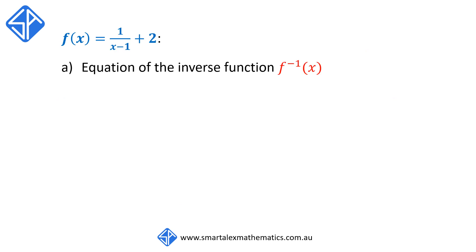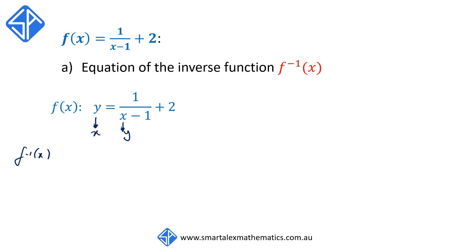Our second example is f of x is equal to 1 over x minus 1 plus 2. To find the equation of the inverse function, we write f of x as y is equal to 1 over x minus 1 plus 2. We then interchange the variables x and y, so our inverse function becomes x is equal to 1 over y minus 1 plus 2.